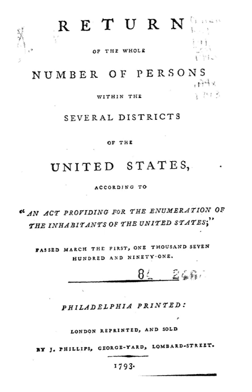The following definitions apply to the 2000 census. White: a person having origins in any of the original peoples of Europe, the Middle East, or North Africa. It includes people who indicate their race as white or report entries such as Irish, German, English, Scandinavian, Scottish, Lebanese, Near-Easterner, Arab, or Polish.